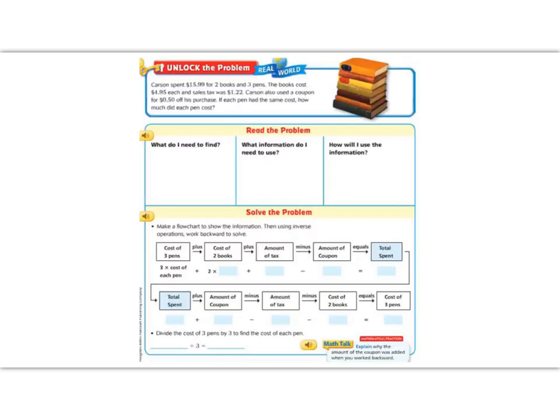Let's begin by reading the Unlock the Problem. It says, Carson spent $15.99 for two books and three pens. The books cost $4.95 each and sales tax was $1.22. Carson also used a coupon for $0.50 off his purchase. If each pen cost the same, how much did each pen cost?